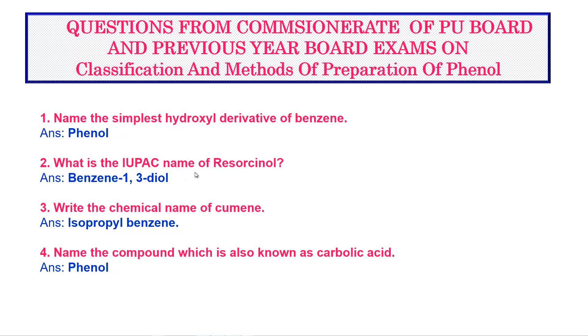What is the IUPAC name of resorcinol? This we have understood in the map. Benzene-1,3-diol is resorcinol.